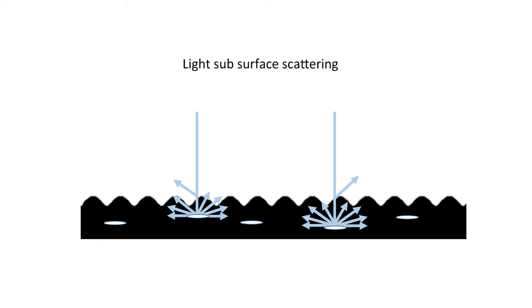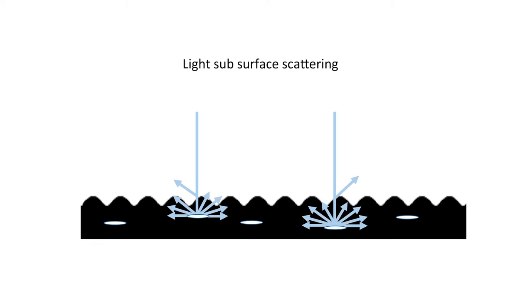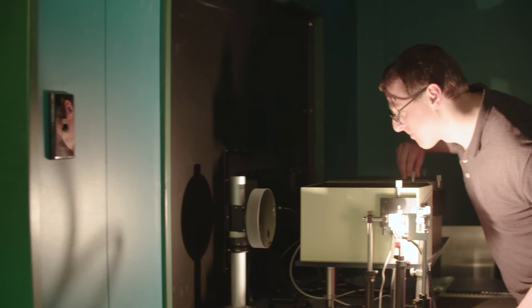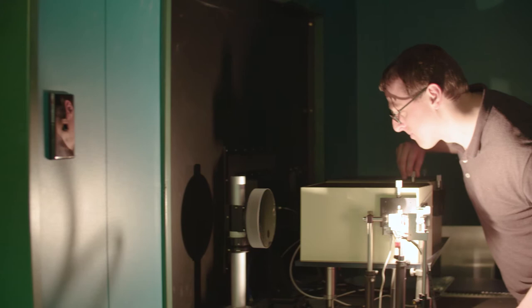For most materials the reflectance we see is made up of a component of light scattered by the top surface and another component that has penetrated the surface and been scattered back to the detector by the bulk of the material. So we may have a high reflectance in a specular direction combined with reflected light in all other directions.